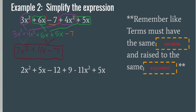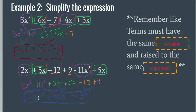Let's try the next one together. Separate the terms, then find like terms. I see 2x squared and negative 11x squared — so 2x squared minus 11x squared, which is negative 9x squared. I also see 5x and plus 5x — 5x plus 5x is 10x. And I have negative 12 and plus 9 — negative 12 plus 9 is negative 3. Final answer: negative 9x squared plus 10x minus 3. I cannot combine anything else, so I am done.